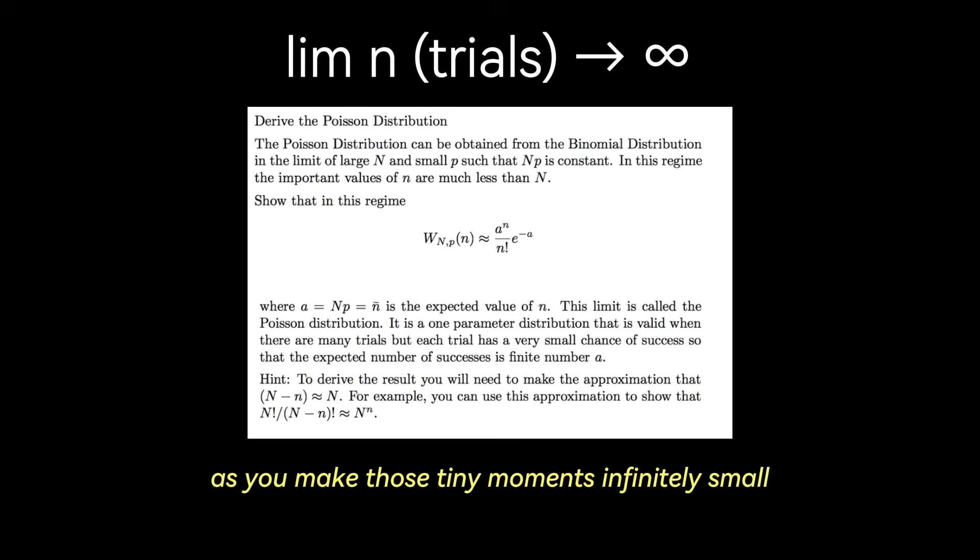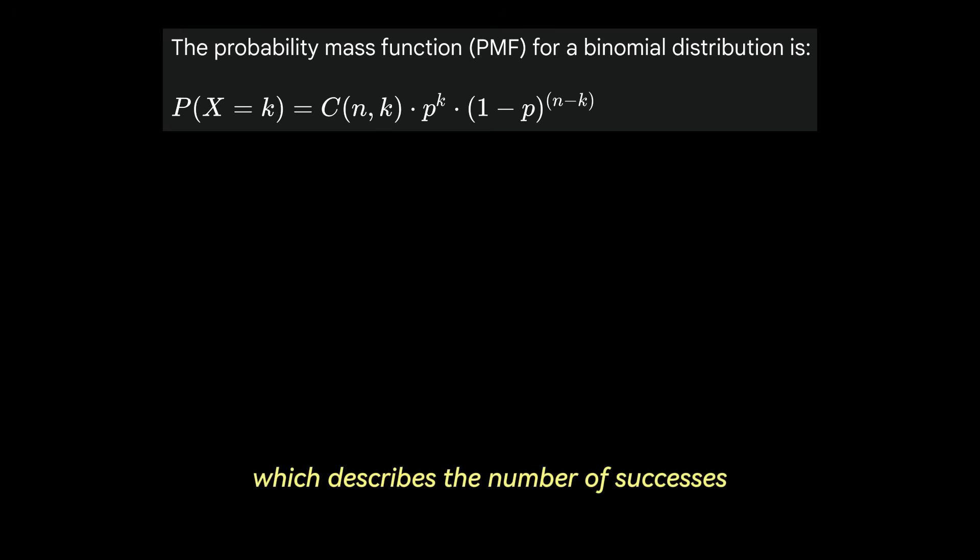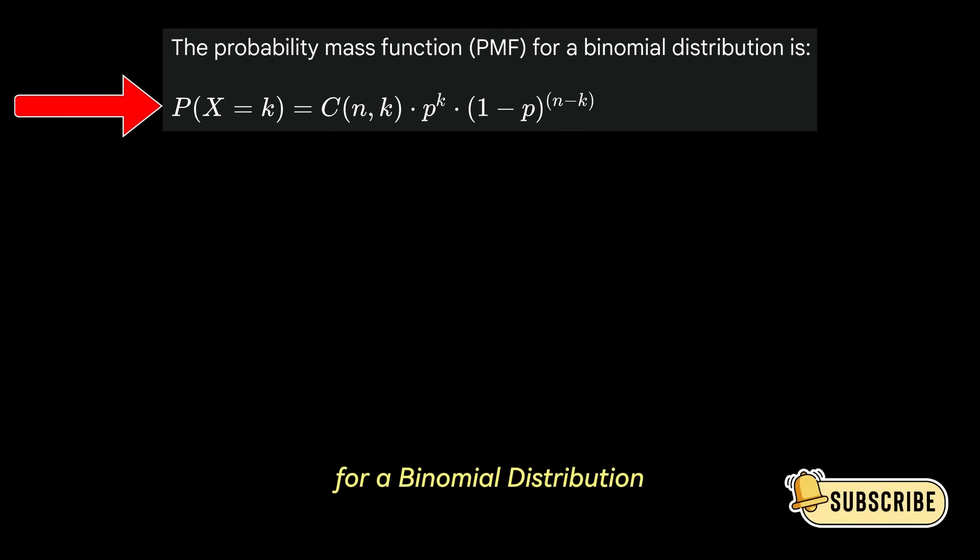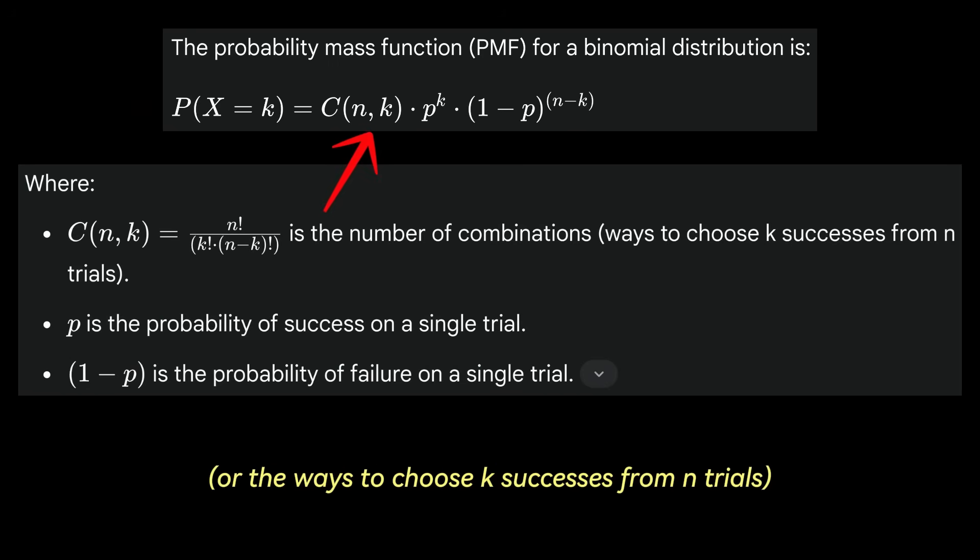The limit of the binomial distribution is the Poisson distribution. So what happens as you make those tiny moments infinitely small and the number of them infinitely large? Even though the chance of a red car appearing in any single infinitesimally small moment is practically zero, over the entire hour you still expect a certain average number of red cars to drive by. That average number is what we call lambda. You can think of it like a smoothed out version of the binomial distribution. Recall the binomial distribution which describes the number of successes k in a fixed number n of independent trials, where each trial has the same probability of success p. Here's the probability mass function for a binomial distribution. And don't let this fancy probability mass function term scare you. It just gives you the probability for each specific countable outcome of a random event.